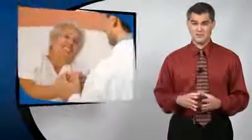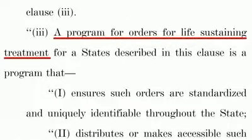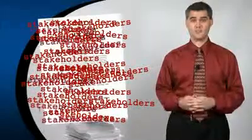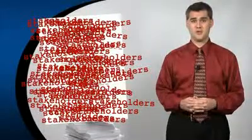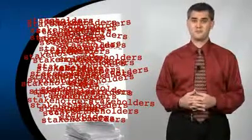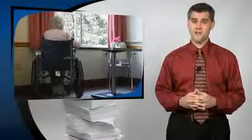So your Grandma can now be dehydrated to death like Terri Schiavo was. But that's not all. This simple little consultation isn't just between Grandma and her doctor. Page 428 says that the Program for Life-Sustaining Treatment is guided by a coalition of stakeholders. The word 'stakeholders' is mentioned 52 times throughout the bill, referring to interested parties who guide various policies on health care provisions, costs, and so forth. In other words, cost is going to very much be a factor in guiding Grandma on the best course of action.